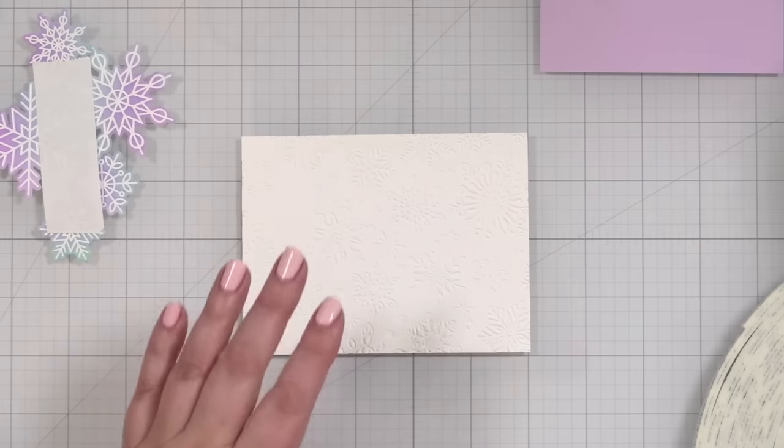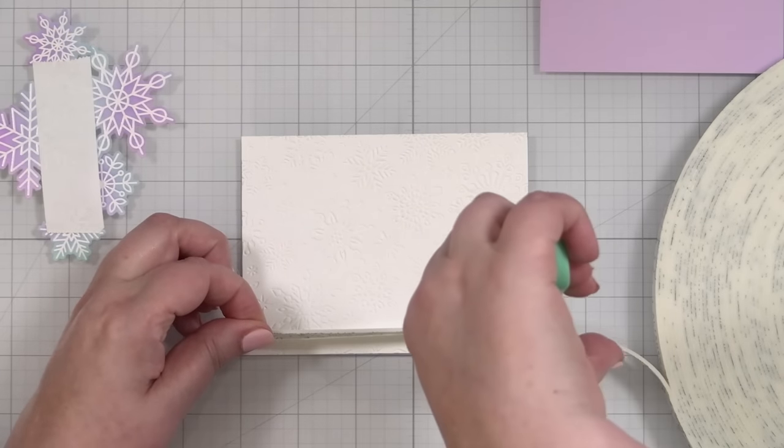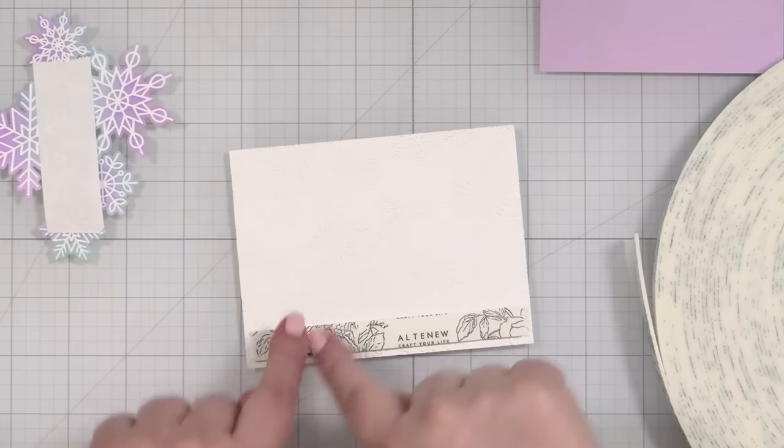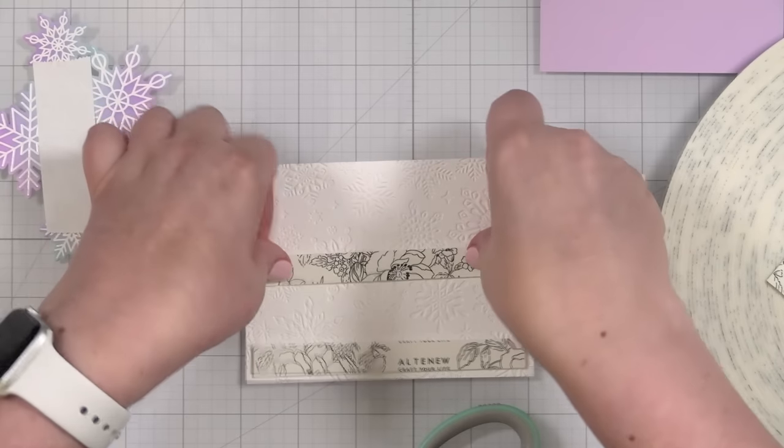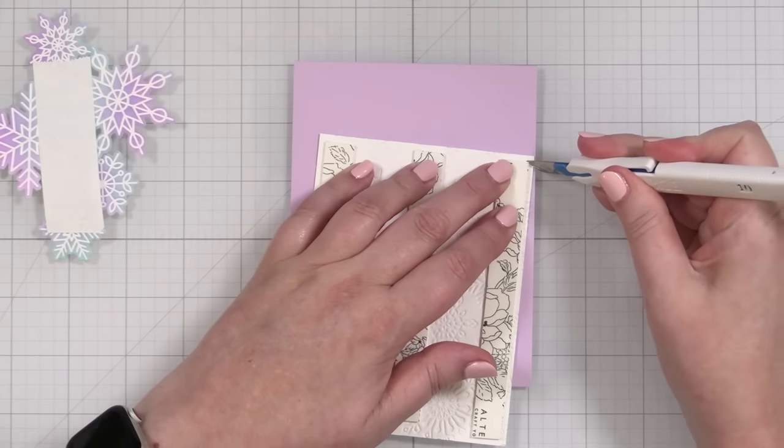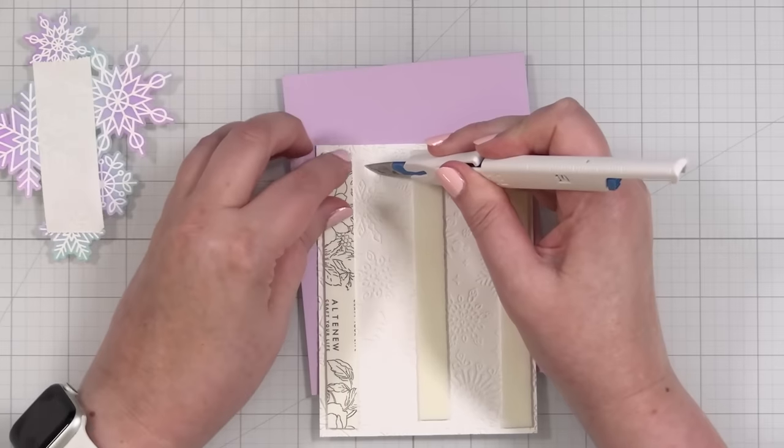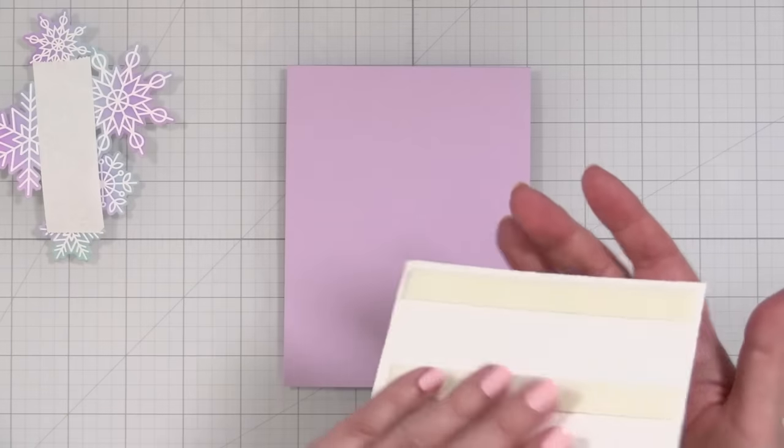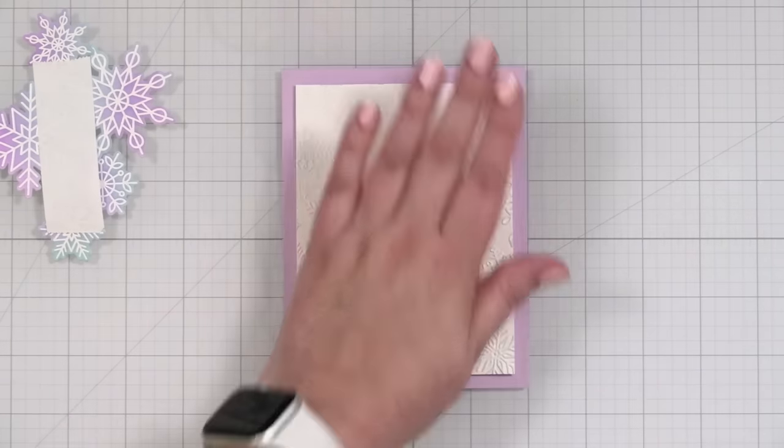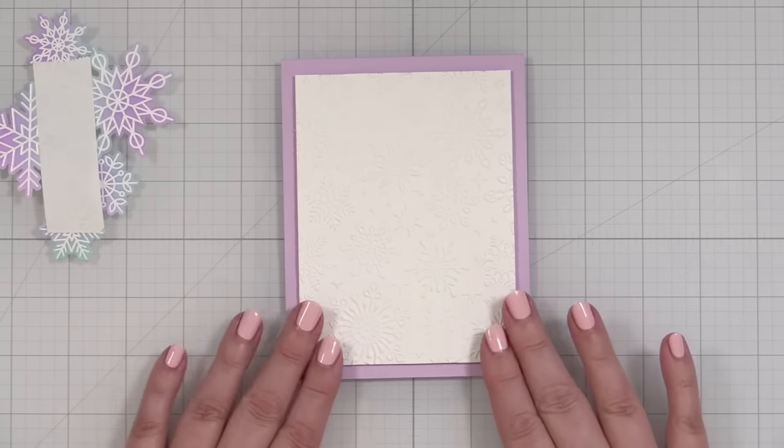Okay. I'm going to take my foam tape. This is the Altenew foam tape. I'm just going to cut some here to size to put on the back. And take the backers off. And we'll pop this down onto the note card like that. And again, I just love that tone on tone texture of the embossing.